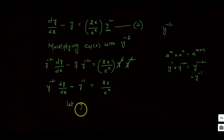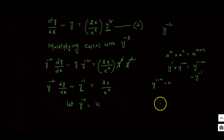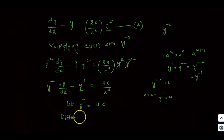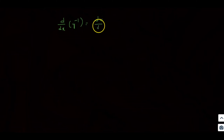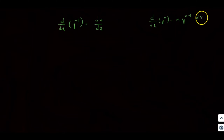Now I apply the substitution: let y^(−1) equal u, which is y^(1−n) = u with n=2. Differentiating with respect to x using the formula d/dx of y^n equals n · y^(n−1) · dy/dx.